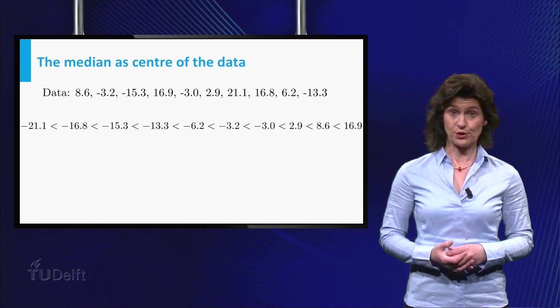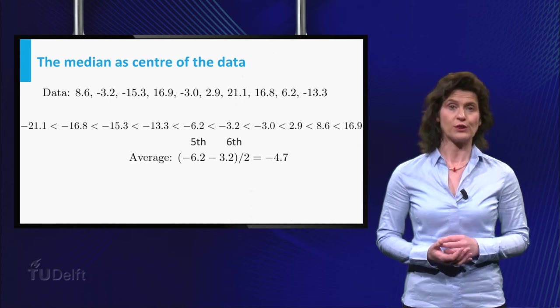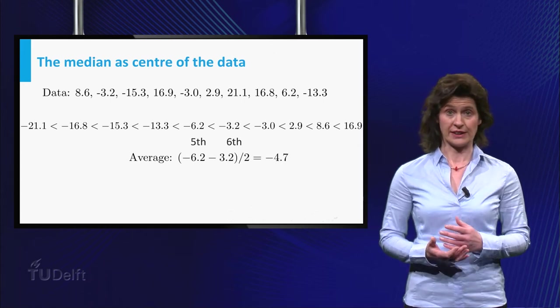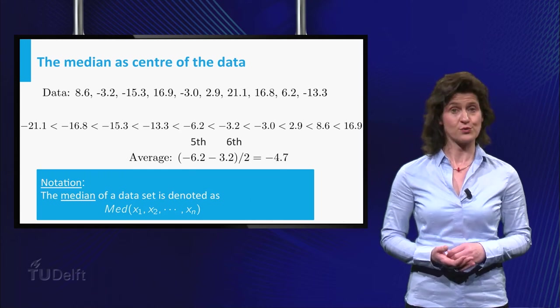If there is an even number of points in the dataset, as here, you choose the average of the two middle points as median, as is done here. So the median of our dataset is equal to minus 4.7.